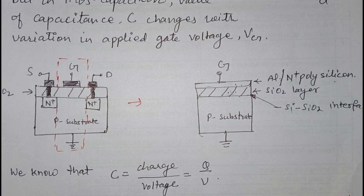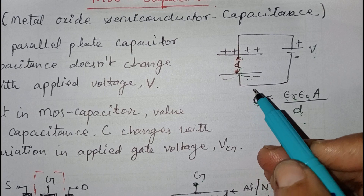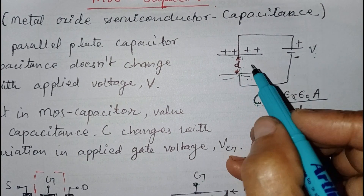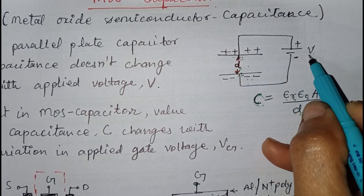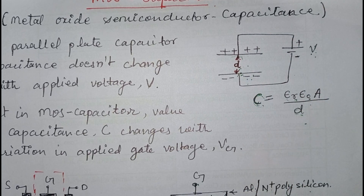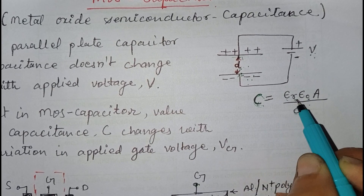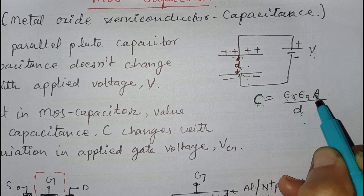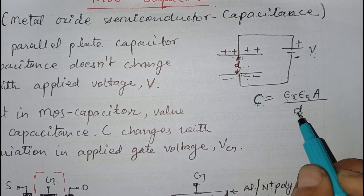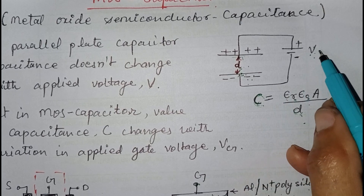We know the conventional capacitor looks like this — a conventional parallel plate capacitor with two plates separated by a distance d, with some dielectric between them. When we apply voltage across these two plates, they get some polarity. The capacitance is given by the relation: epsilon_r times epsilon_naught times the overlapping area of the two plates, divided by the distance between the plates.